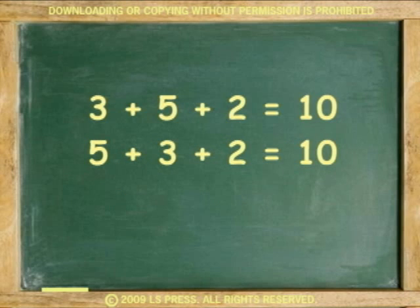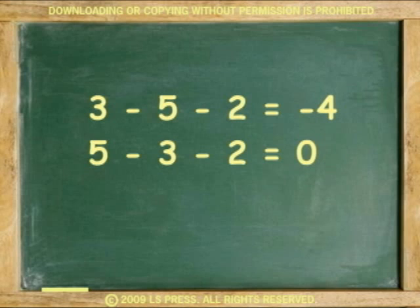For example, we can add 3 plus 5 plus 2 equals 10 and switch the order to 5 plus 3 plus 2 and still get the same answer. Doing it with subtraction will get you a different answer.